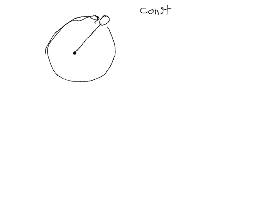Even though it's moving at a constant speed, this tennis ball is still accelerating, because the definition of acceleration — if you remember back in chapter two — is change in velocity over time. Velocity is a vector. If either the magnitude or the direction of the velocity is changing, there's an acceleration. If something is moving in a circle at constant speed, the magnitude of the velocity is not changing, but the direction of the velocity is changing. Therefore, there is an acceleration.